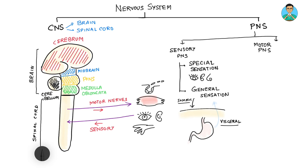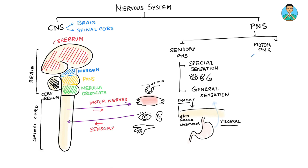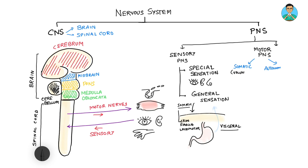So visceral sensations come from visceral organs, and somatic sensations come from your skin, fascia, and locomotor system. Now for the motor PNS: it can be either a voluntary part or an involuntary part. The voluntary part is known as the somatic motor PNS, and the involuntary part is known as the autonomic nervous system. The somatic part is voluntary and the autonomic part is involuntary. The autonomic motor system has two components: the sympathetic nervous system and the parasympathetic nervous system.